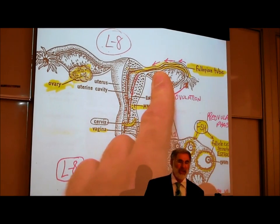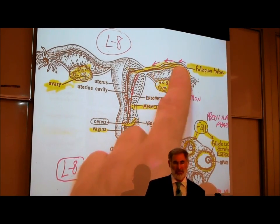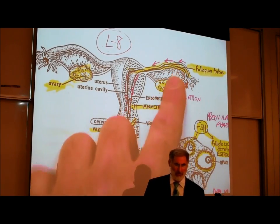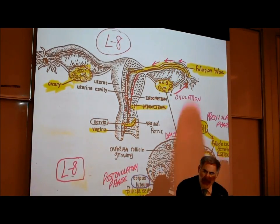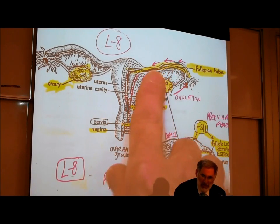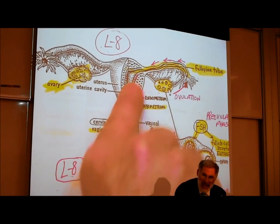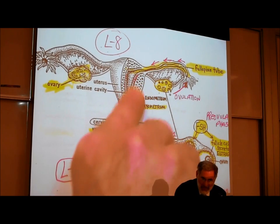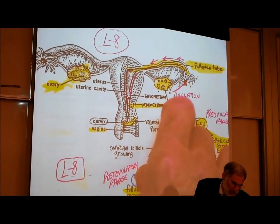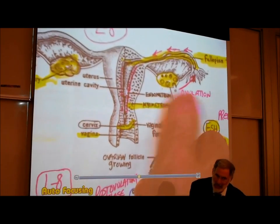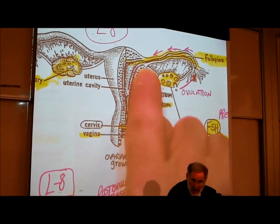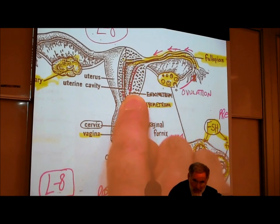Fertilization — the uniting of a sperm with an egg — if it's going to happen and result in an embryo, it's got to occur in the fallopian tube. If the egg is fertilized by a sperm it will form a zygote which develops into an embryo, and that embryo will implant in the inner lining of the uterus called the endometrium, where blood vessels are growing.